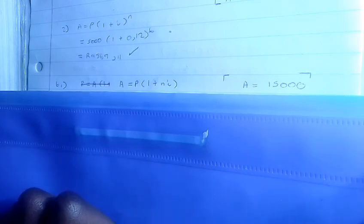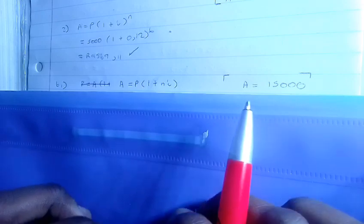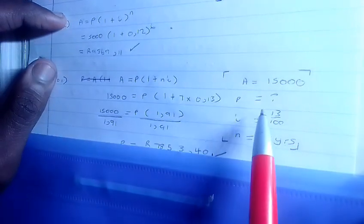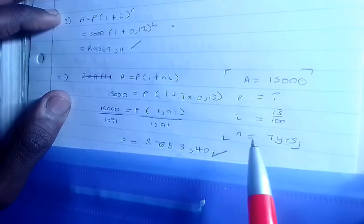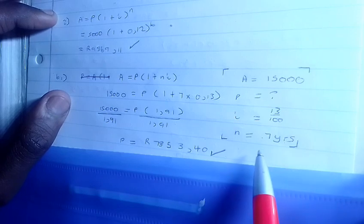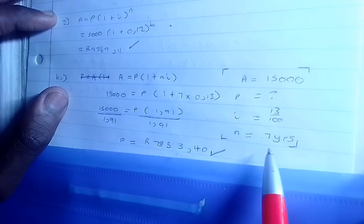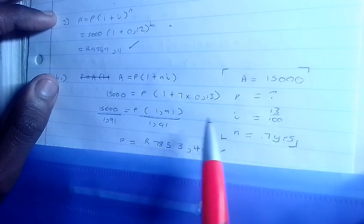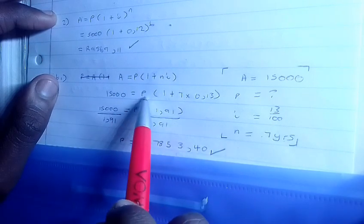This investment grew to 15000, which is the accumulated price, so A = 15000. P is what you're looking for, which is the original price. The interest you divide by 100, and the number of years is seven. So this is how you do it: 15000 = P(1 + 7 × 0.15).